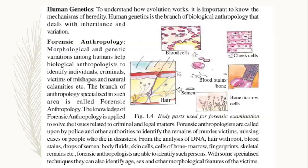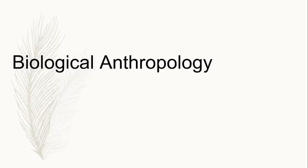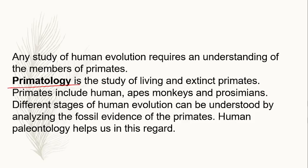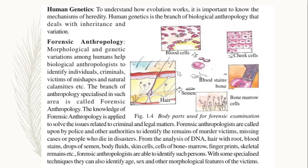So in Biological Anthropology we studied: understanding evolution and variation, studying biological aspects, primatology and different stages of human evolution, human fossils, human genetics, and forensic anthropology — which is actually a branch of applied anthropology that applies the concepts of anthropology for greater human good.